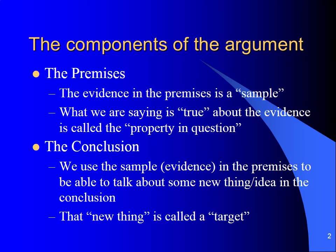Now, the conclusion. In the conclusion of an inductive argument, we use the evidence from our premise, or our sample, to be able to talk about some new idea or new thing in the conclusion. This is the way in which we expand our knowledge or make predictions. That new thing in the conclusion is called a target — sometimes it's called a target item, and other times it's called a target population, depending on the type of inductive argument we are looking at.